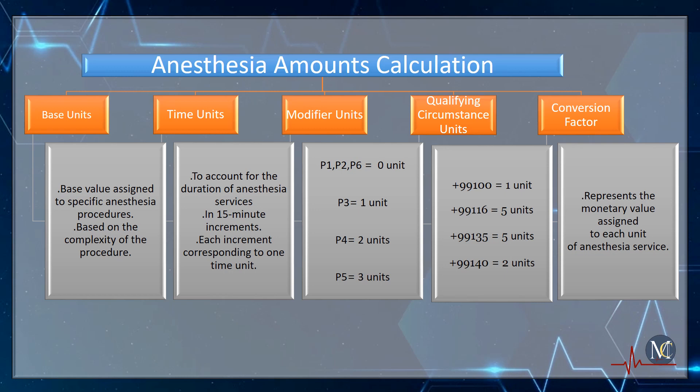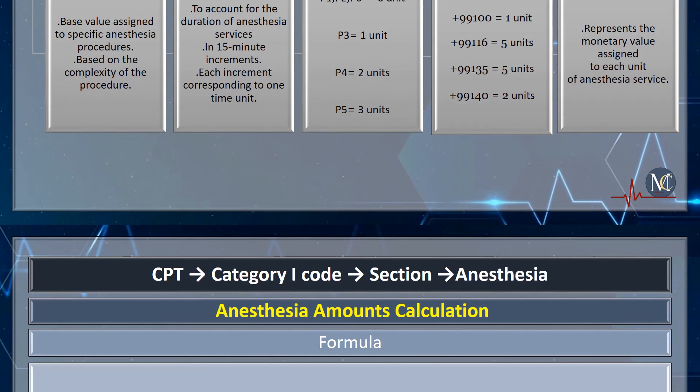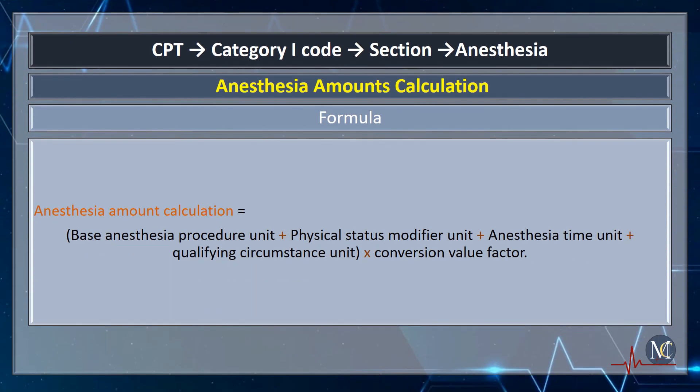Once the total number of base units, time units, modifier units, and qualifying circumstance units is determined, they are multiplied by a Conversion Factor used to calculate the anesthesia fee. The Conversion Factor represents the monetary value assigned to each unit of anesthesia service. To find the anesthesia amount, we add the base procedure unit, physical status modifier unit, anesthesia time unit, and qualifying circumstance unit, then multiply all these values by the Conversion Factor.